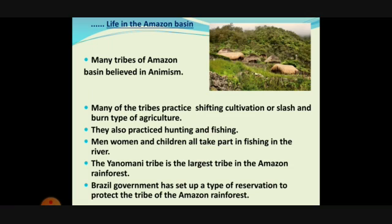The Amazonians live in temporary sheds, and are people who live by gathering and hunting — they never settle permanently in one place. They settle somewhere, and after some time they move to another place. Many tribes of the Amazon Basin believe in a religion called animism, which respects nature. They worship deities like the sun, moon, stars, and other forces of nature.